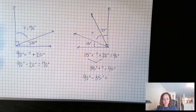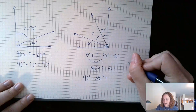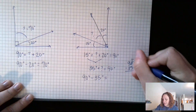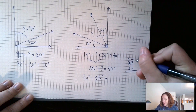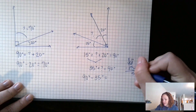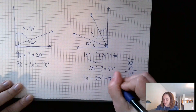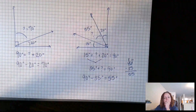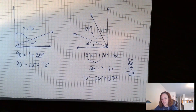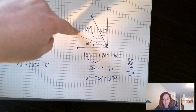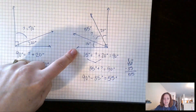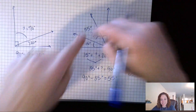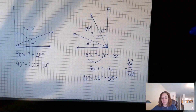90 minus 35 — I'll stack it to regroup. That becomes 8 and 10; 10 minus 5 is 5, and 8 minus 3 is 5. So my unknown angle equals 55 degrees. I just take what I know and use it to find what I don't — the whole thing is 90, and the three pieces add up to 90.